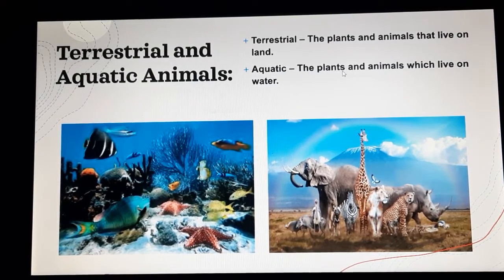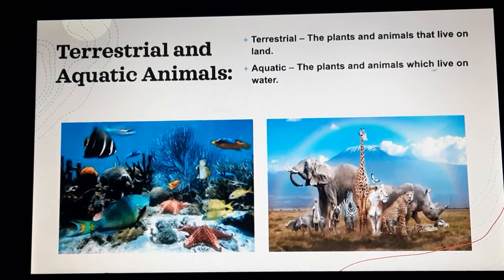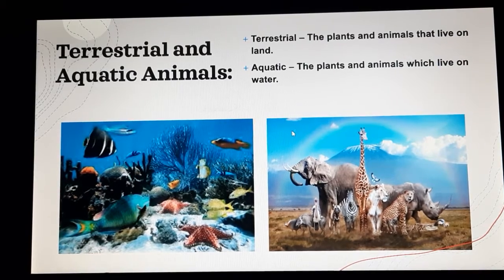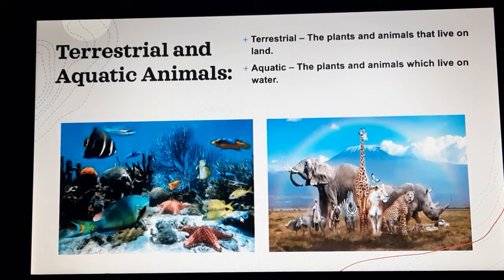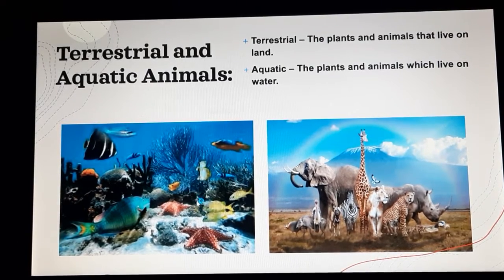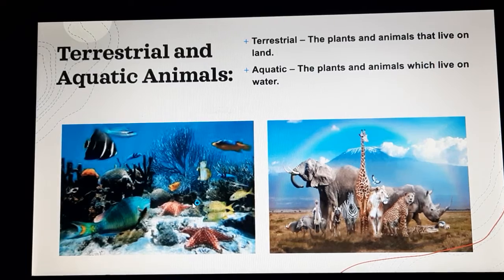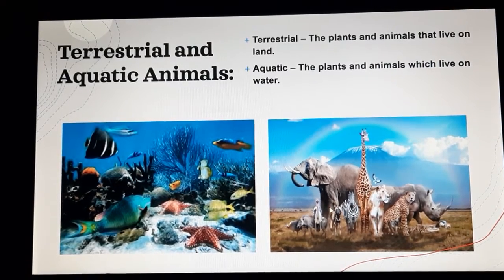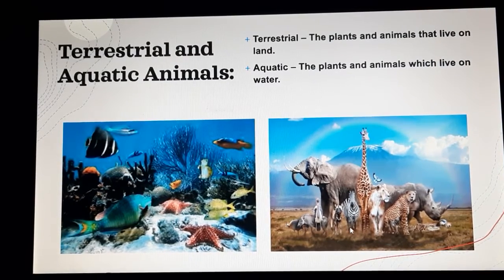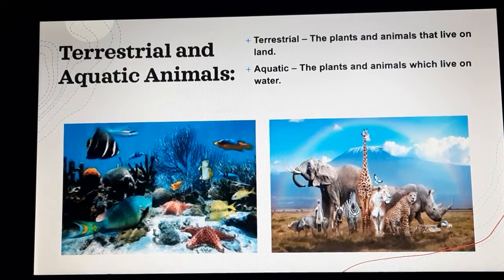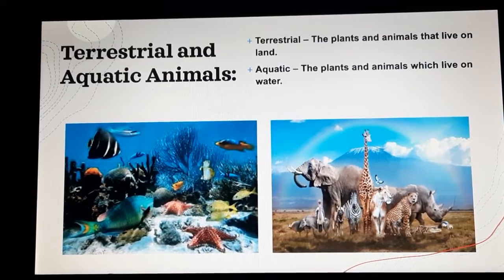Aquatic refers to the plants and animals which live in water. Those animals which live in water are aquatic animals, and those which live on land are considered to be terrestrial animals.